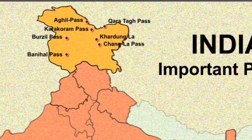Next one is the Lanakh La Pass. It is a mountain pass in Tibet, which is the autonomous region of China. It is on the south-eastern boundary of the Aksai Chin region that is controlled by China.